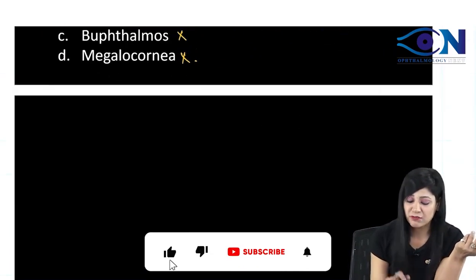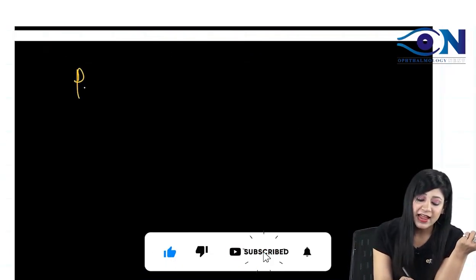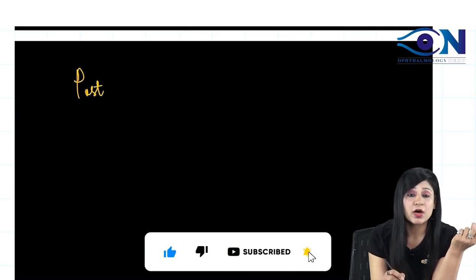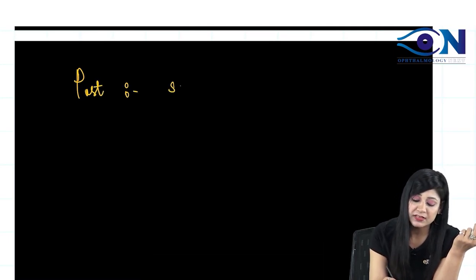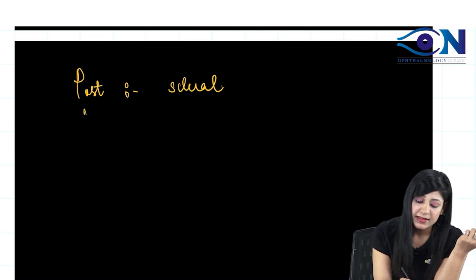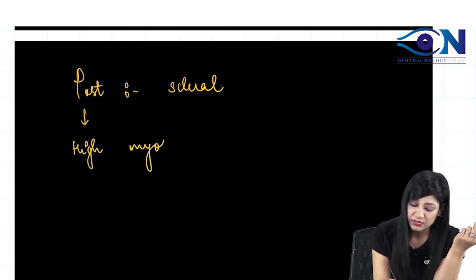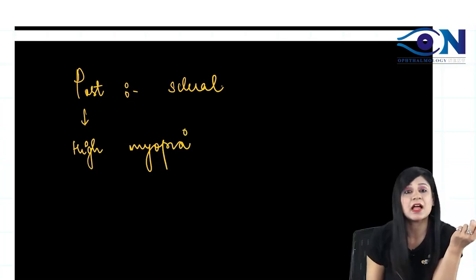Where do you get the posterior staphyloma? While anterior staphyloma is found in the cornea, posterior staphyloma is the scleral staphyloma and it is actually found in the high myopia. So, this is a related question that can be asked to you.